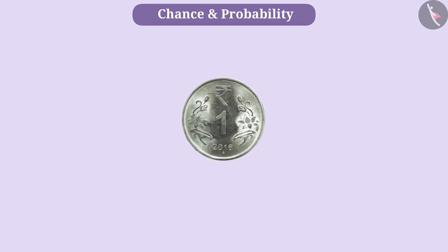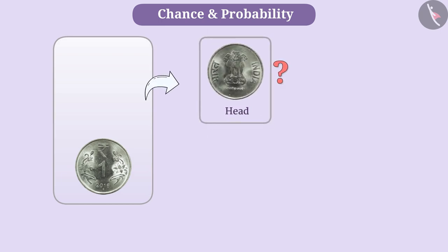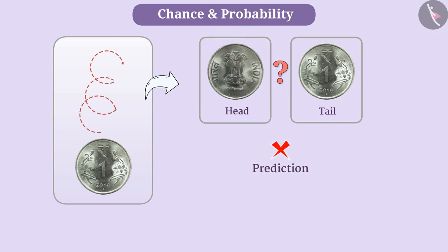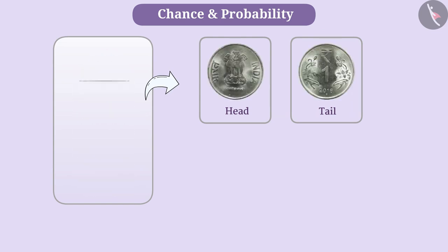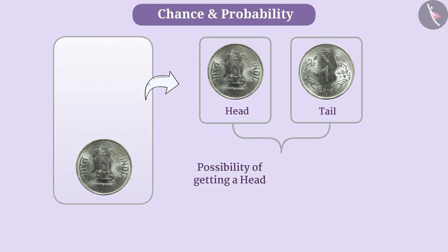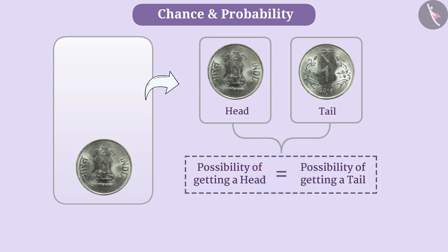Now look here. Here is one coin. Can you tell whether we will get a head or a tail in the experiment of tossing the coin? Here we certainly cannot predict whether we will get a head or a tail. In such a situation, getting one from either of these two is a possibility or a chance, because both are possible outcomes. The possibility of getting a head and the possibility of getting a tail are equal. In such a situation, we say that the outcomes are equally likely.